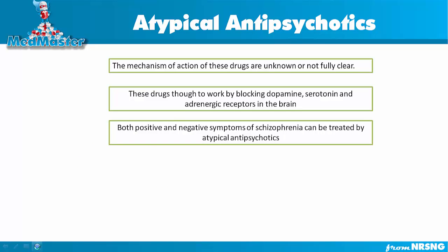The mechanism of action of atypical antipsychotics is really unclear, but these medications work on multiple neurotransmitters. They block dopamine, serotonin, and adrenergic receptors in the brain.